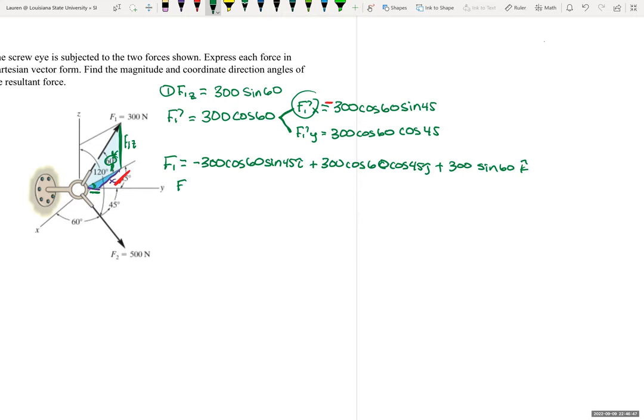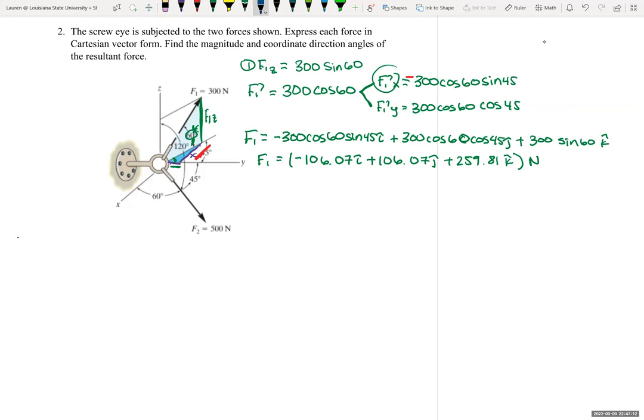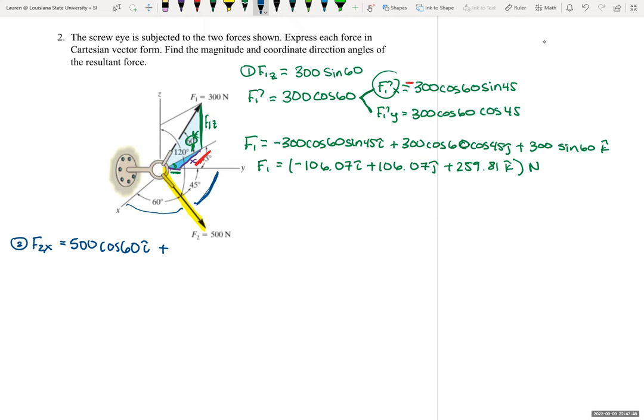So now let's find F2. F2 X. Here's our F2. And the angle between F2 and X is that 60 degrees. So it will be 500 cosine 60 I plus our Y is 45 degrees from the Y axis. So plus 500 cosine 45 J.